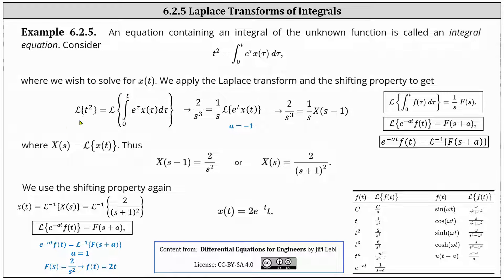On the left, the Laplace transform of t squared is equal to two divided by s cubed. On the right, the Laplace transform is equal to one divided by s times F(s), where F(s) is the Laplace transform of f(τ). We write this as one divided by s times the Laplace transform of e to the t times x(t), since the entire definite integral is a function of t.